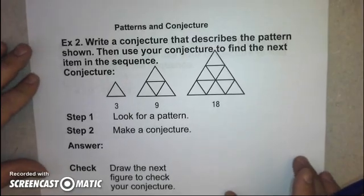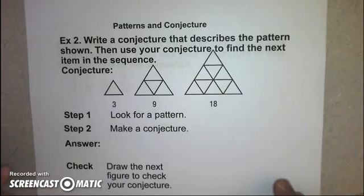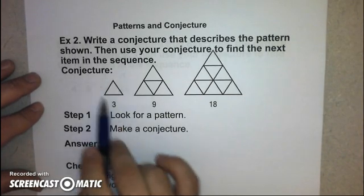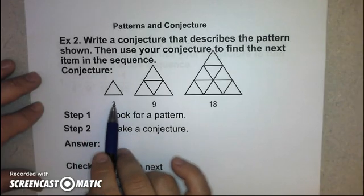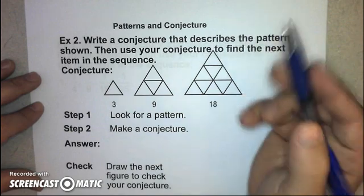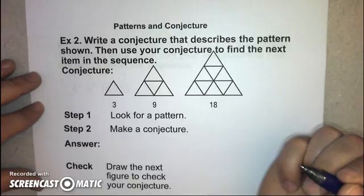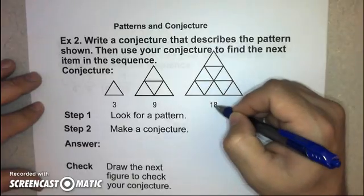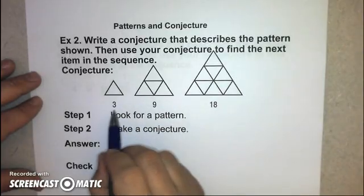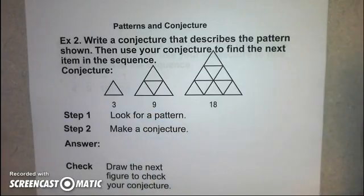For example 2, we're going to do some of the same things. I'm going to let you try and do this part a little bit more on your own. And then we're going to check by drawing our next figure to make sure it works. This is our first term, made up of three segments. Then this figure is made up of nine separate segments. And then this next one is made up of 18 of these smaller segments. So you'll notice we go from three to nine to 18.